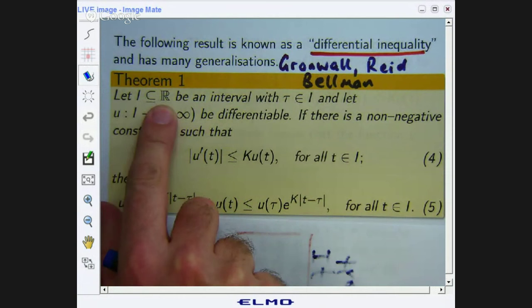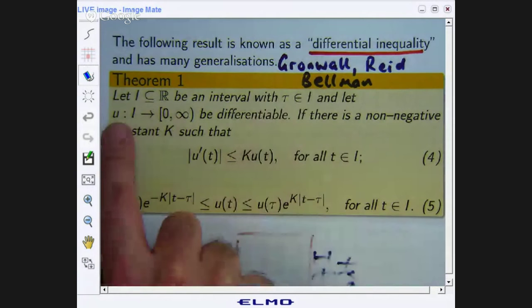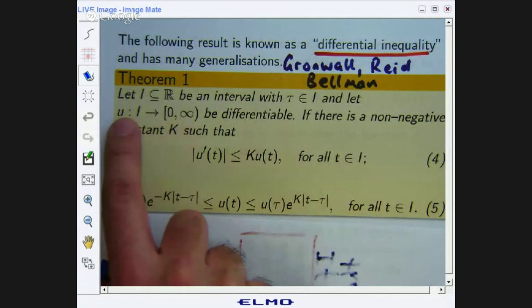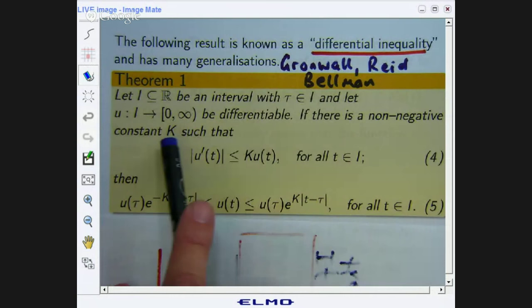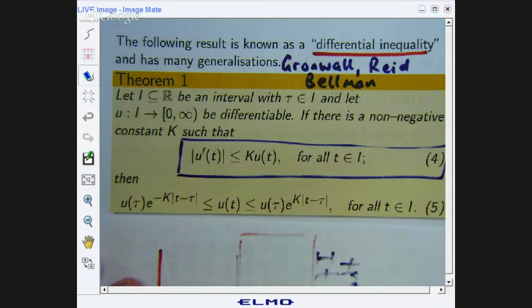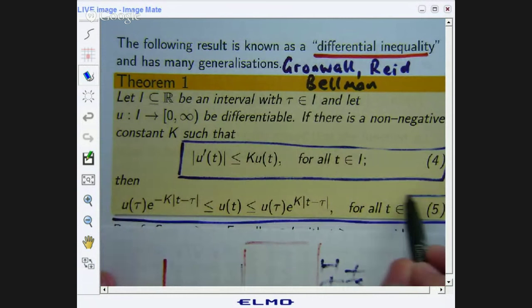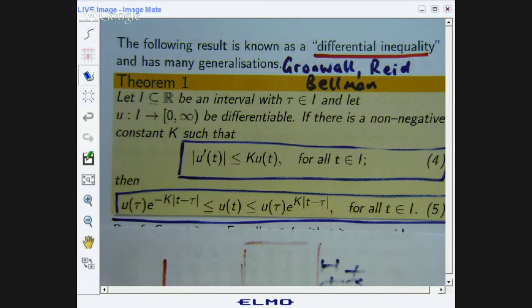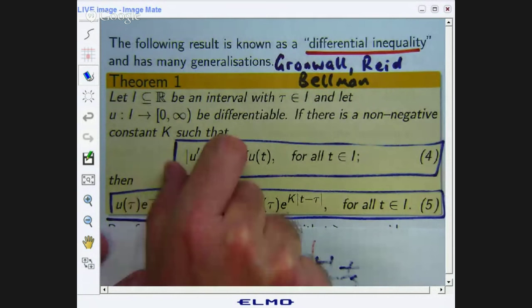Alright, so let I be an interval of the real line. Let τ be a point in the interval I and let u be defined on I and u is non-negative. It's some sort of function. And in particular it's differentiable on I. If there is a non-negative constant K such that this differential inequality holds: |u'(t)| ≤ Ku(t) for all t in the interval, then u satisfies this kind of inequality.